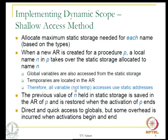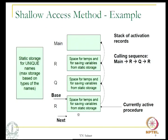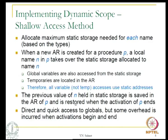The advantage of shallow access is that every name has a unique static address — there is no need to use a stack pointer to access local or global variables. All variables, except temporaries which are on the activation record, use static addresses, making this a very fast mechanism. However, the previous value held in static storage must be saved in the activation record and restored when the activation ends — this store-and-restore is an overhead. So direct and quick access to globals is possible, but some overhead is incurred when activations begin and end.